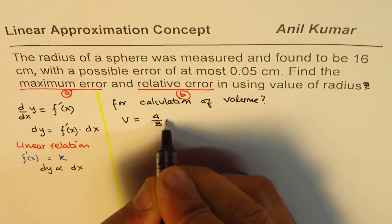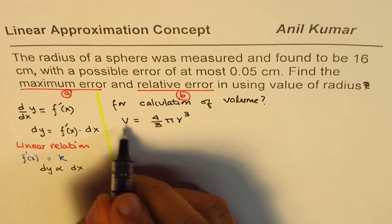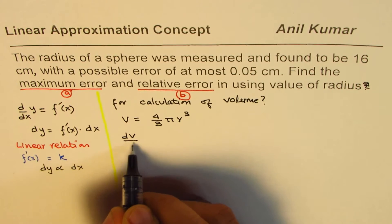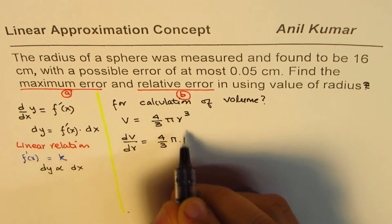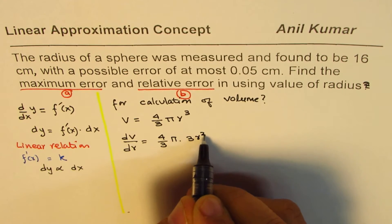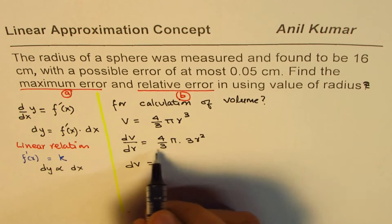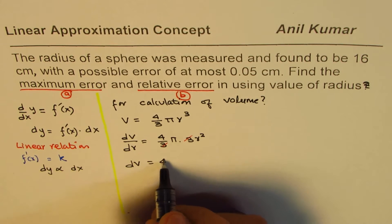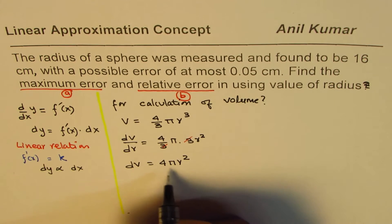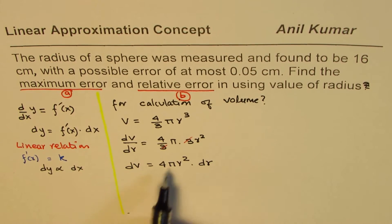For a sphere, the formula for volume is V = (4/3)πr³. Taking the derivative with respect to r: dV/dr = (4/3)π · 3r² = 4πr². Rearranging, dV = 4πr² dr. We cancel the threes and get the surface area of the sphere, 4πr², times dr. So change in volume is directly proportional to change in radius.